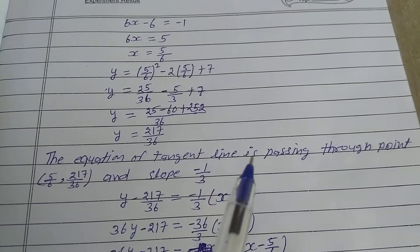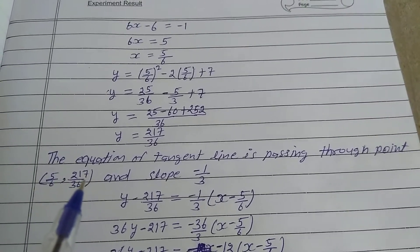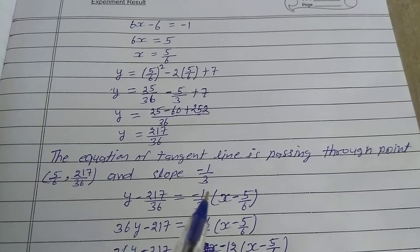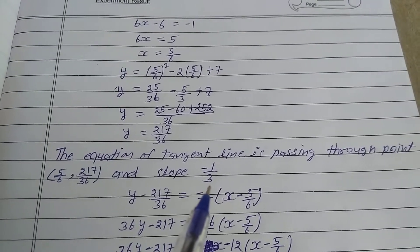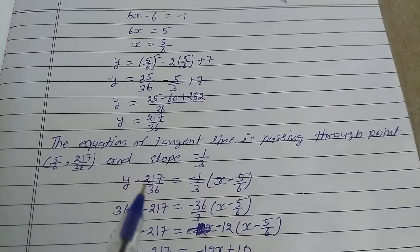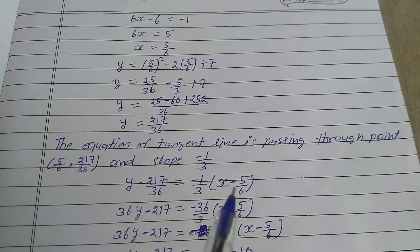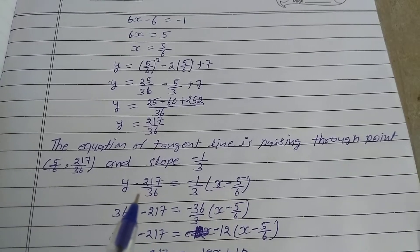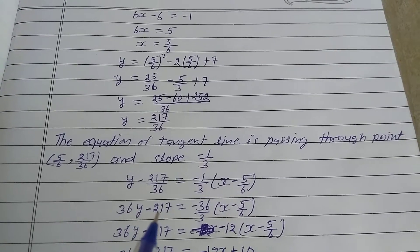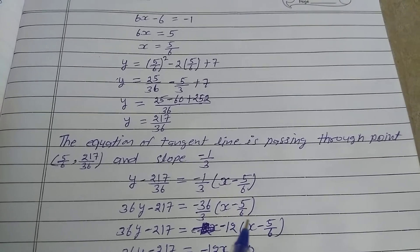The tangent line passes through point (5/6, 217/36) with slope -1/3, since the tangent slope is -1 divided by the perpendicular line slope 3. Using point-slope formula: y - 217/36 = (-1/3)(x - 5/6). Taking LCM 36 on the left side: 36y - 217 = (-36/3)(x - 5/6).